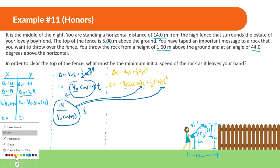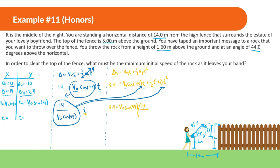So now I have: 3.4 equals v_initial times sine of 44 times [14 divided by (v_initial times cosine of 44)], plus one-half times negative 10 times [14 divided by (v_initial times cosine of 44)] squared. When we square the second t term, everything inside gets squared: so we have 14 squared divided by v_initial squared times cosine squared of 44.